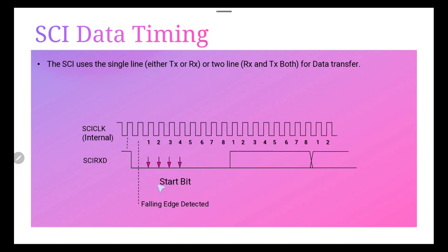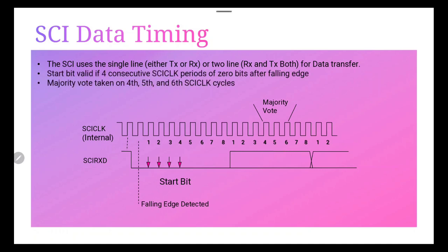If any bit is not zero at that point, the processor starts over and begins looking for another start bit. For the bits following the start bit, the processor determines the bit value by making three consecutive samples in the middle of each bit. These samples occur at the fourth, fifth, and sixth SCI clock periods, and the bit value is determined on a majority basis — the value of the LSB data is based on what the majority of the fourth, fifth, and sixth clock samples show.